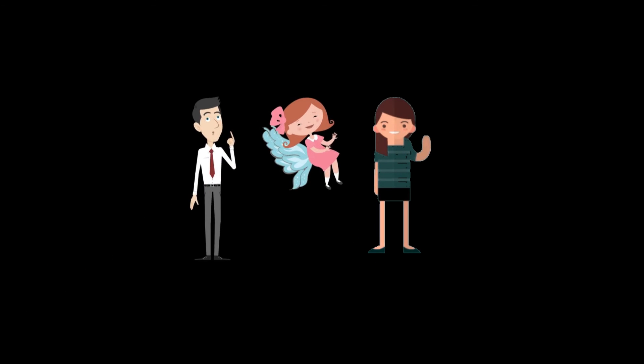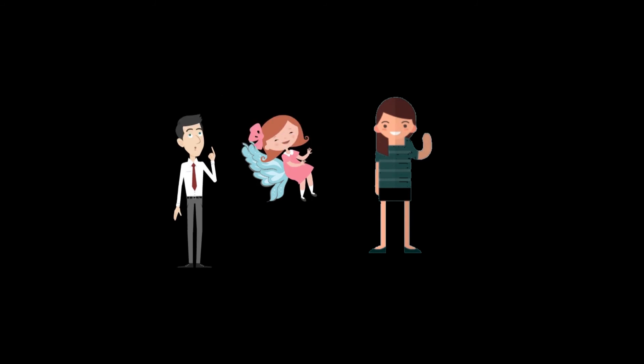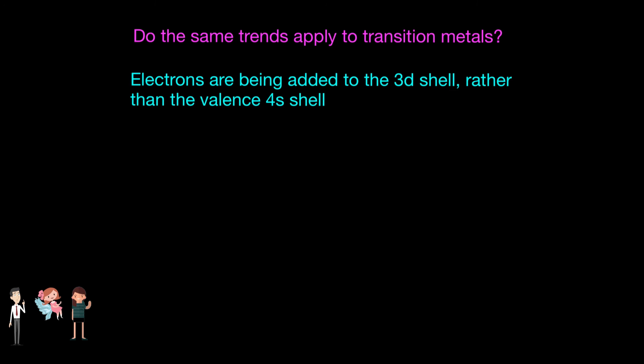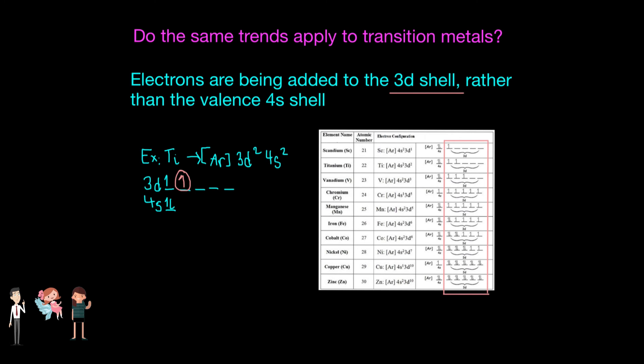Wow, that was so interesting. I learned so much about the wonders of the periodic trends. Although I've learned the five basic trends of effective nuclear charge, atomic radius, ionization energy, electron affinity, and electronegativity, how can I apply them to the transition metals? I know the trends of atomic radius decrease along a period as a result of effective nuclear charge, but does it do the same for transition metals? If one was to look at the addition of electrons in transition metals, electrons are being added to the 3d shell rather than the 4s valence shell. Just look at the electron configuration from scandium to zinc — the 4s shell remains at 4s², with one electron added to the 3d shell. Would this have any effects on the periodic trends of these d-block elements?